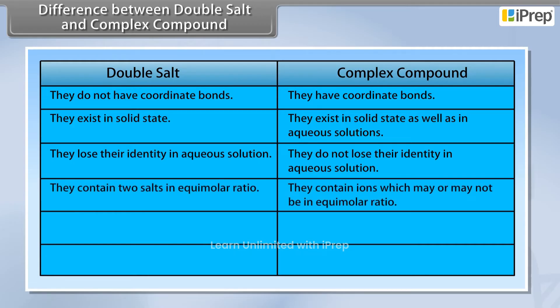Double salts contain two salts in equimolar ratio, whereas complex compounds contain ions which may or may not be in equimolar ratio.